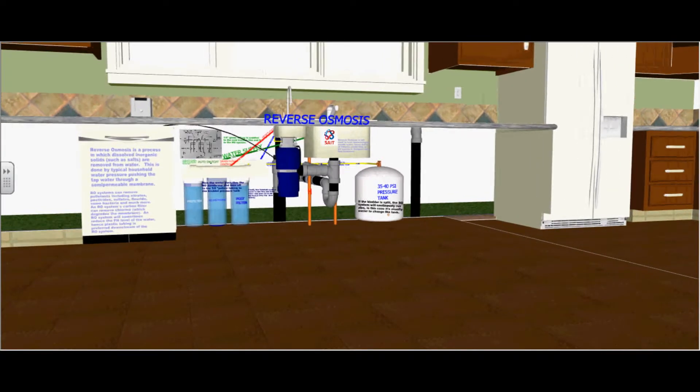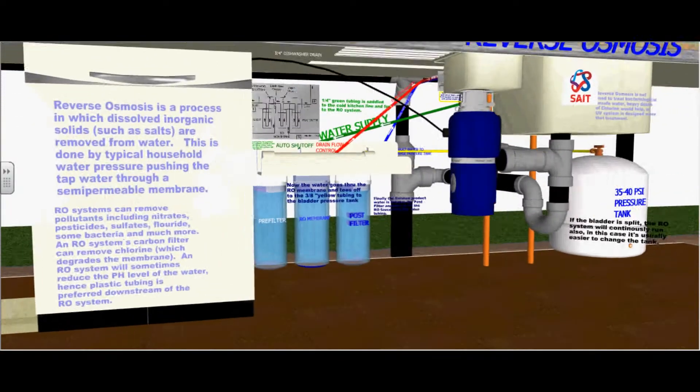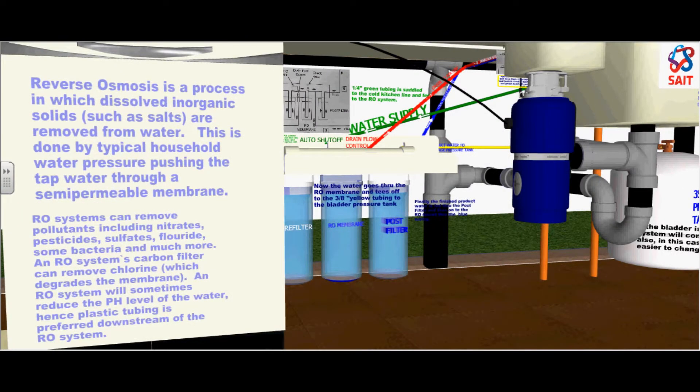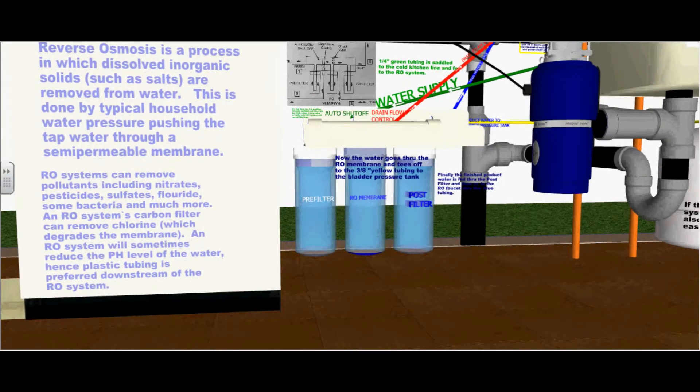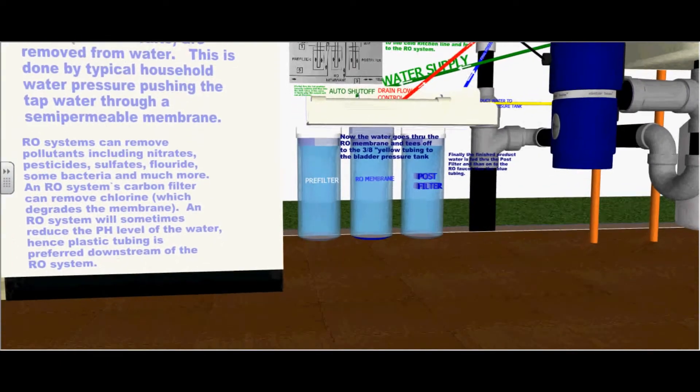Reverse osmosis is a process in which dissolved inorganic solids such as salts are removed from water. This is done by typical household water pressure pushing the tap water through a semi-permeable membrane.